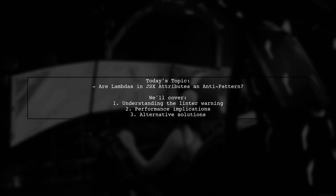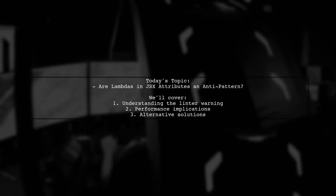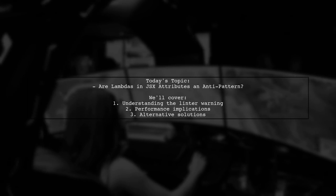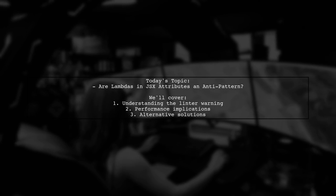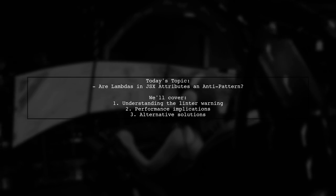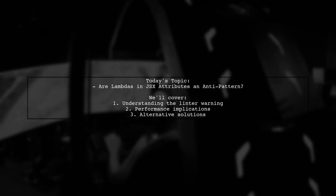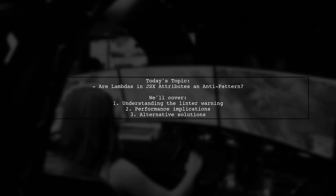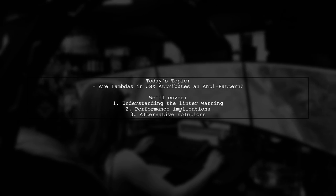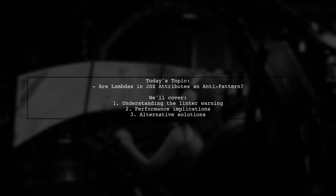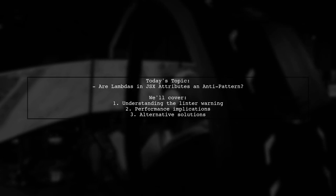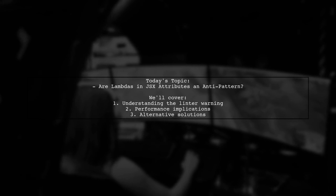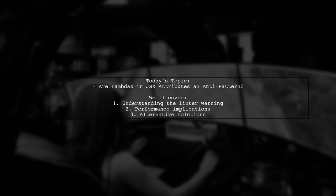Welcome to our Tech Explainer video. Today we're tackling an interesting question that many React developers encounter. Our viewer asks: are Lambdas in JSX attributes an anti-pattern? This question arises from a warning given by a new linter, React, which states that Lambdas are forbidden in JSX attributes due to their rendering performance impact. Let's dive into this topic and explore the implications of using Lambdas in JSX, especially when it comes to passing parameters to event handlers inside loops.